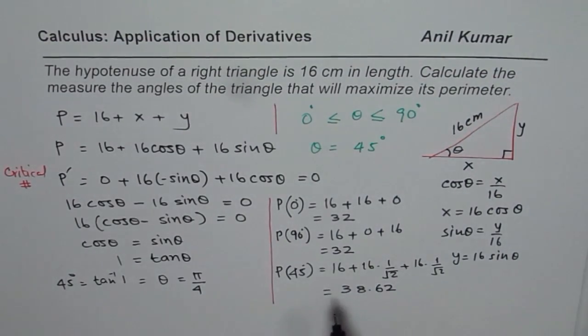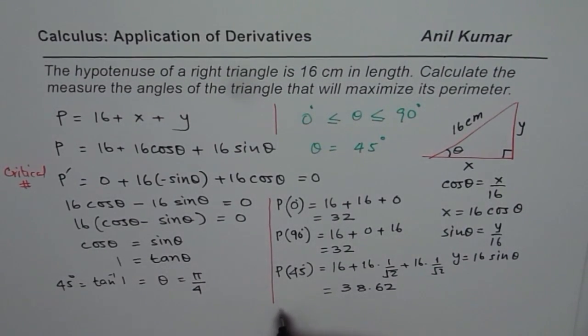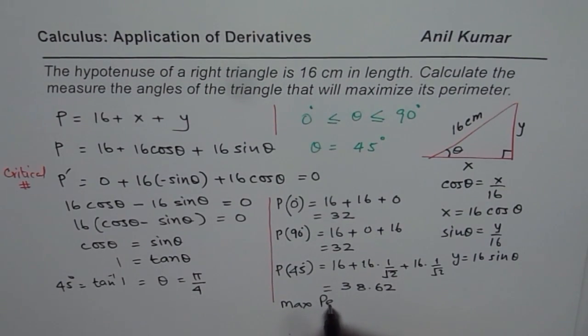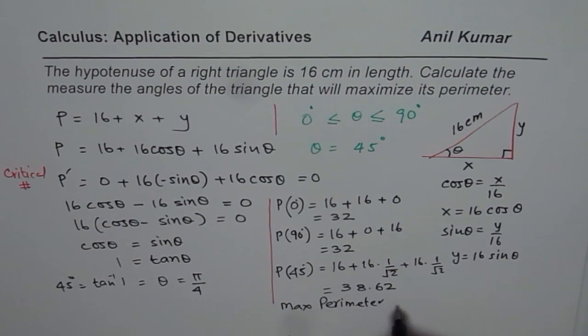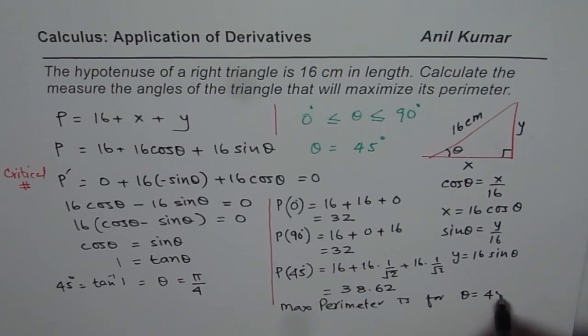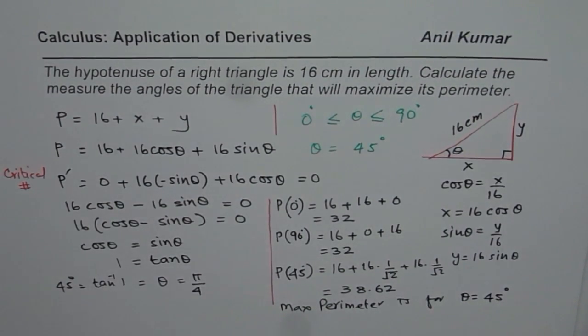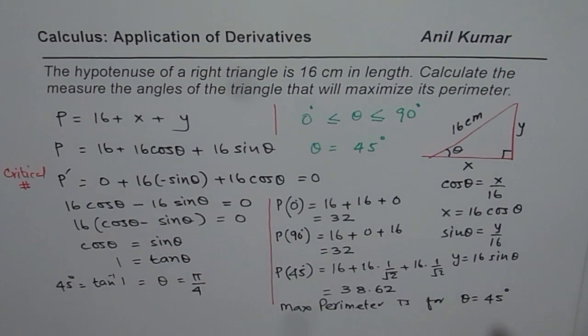So definitely, this is more than 32, and therefore, we can say that the maximum perimeter is for theta equals to 45 degrees. So that is how we can find the angle within the right angle triangle.